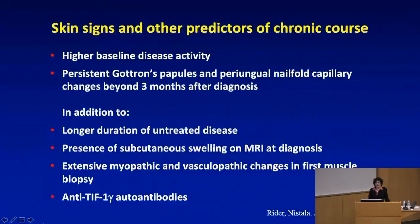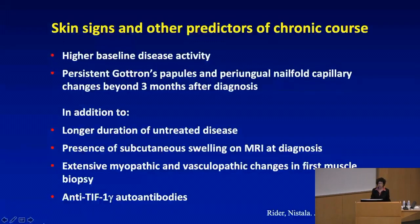Skin signs are also helpful as predictors. More persistent Gottron's papules and periungual nail fold capillary changes beyond three months after diagnosis are predictors of a more chronic course, as is higher baseline disease activity. Other predictors include longer duration of untreated disease, presence of subcutaneous swelling on MRI at diagnosis, extensive myopathic and vasculopathic changes in the first muscle biopsy, and anti-TIF-1 gamma autoantibodies.